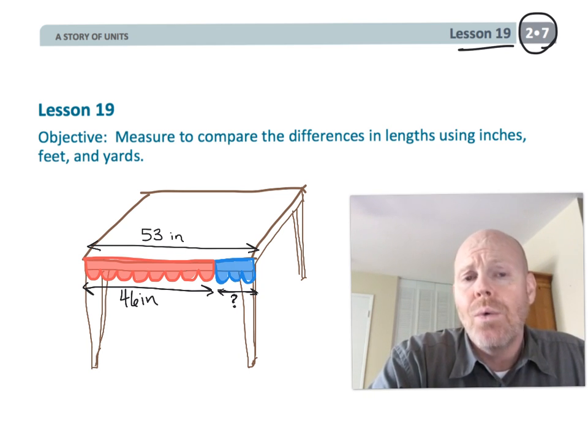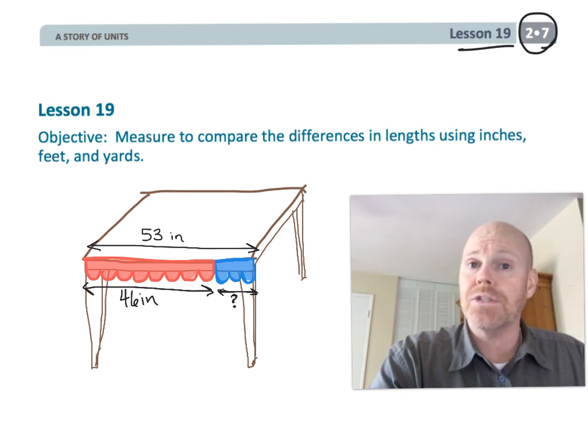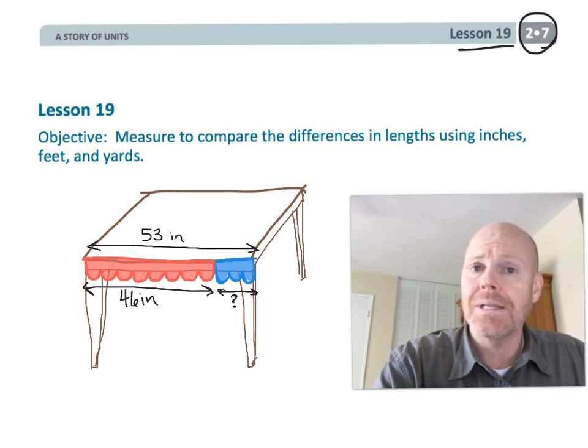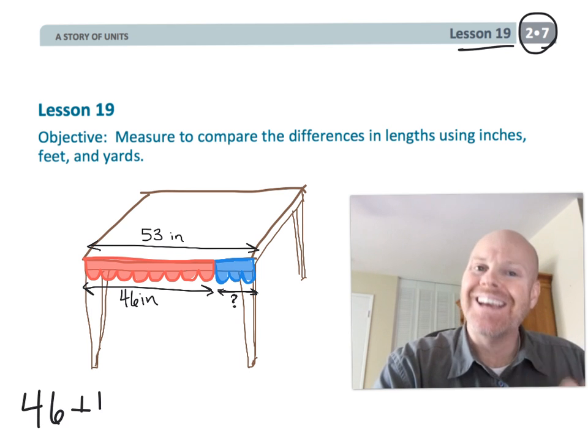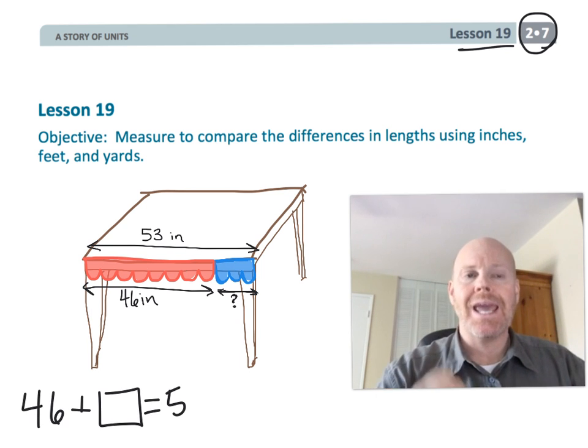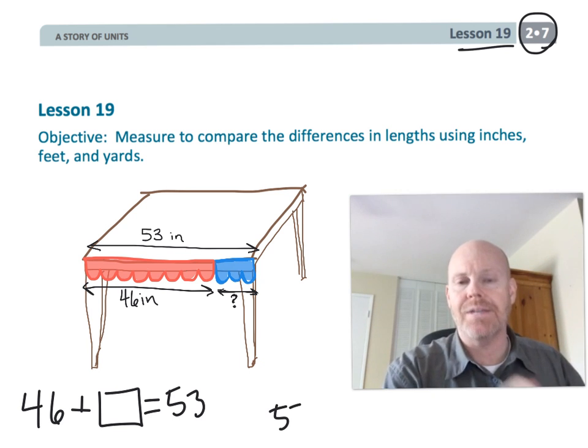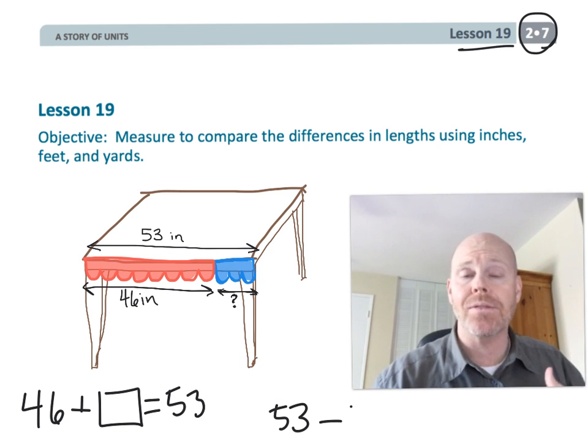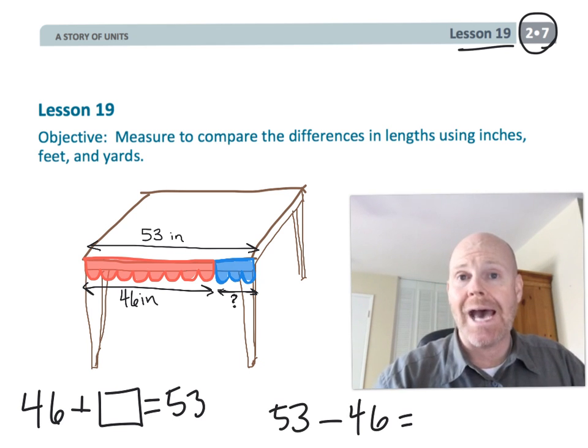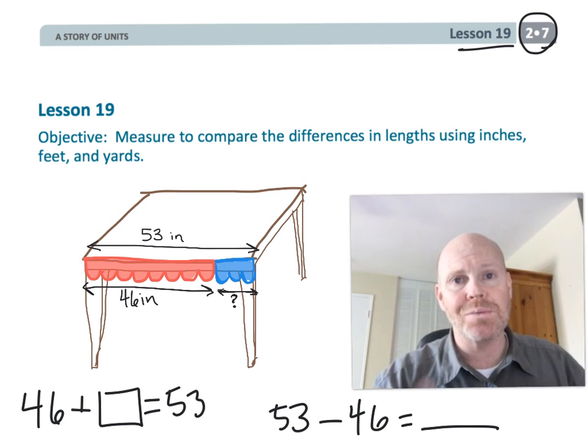The idea is we can either use an addition problem, so it's addition with a missing addend to solve this problem, or we could use the classic subtraction. The idea is we can use inches and feet and yards and compare things and essentially add and subtract just like normal.